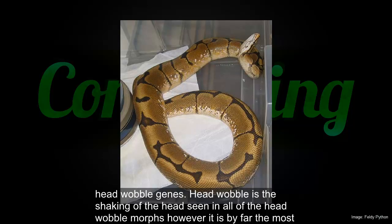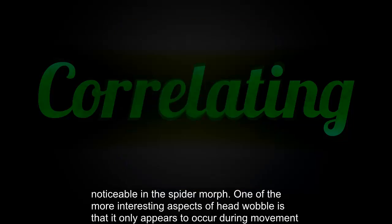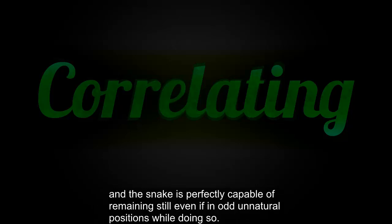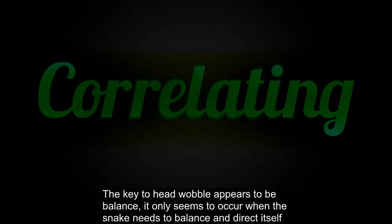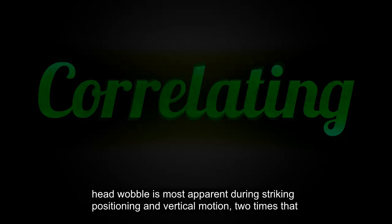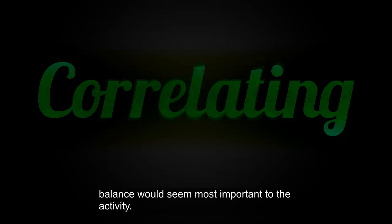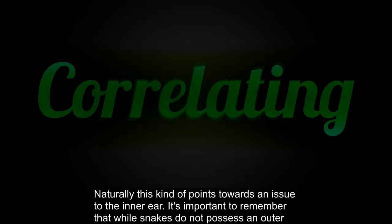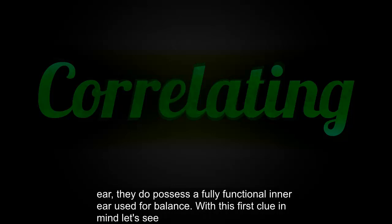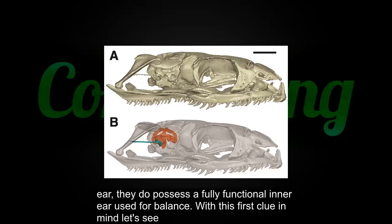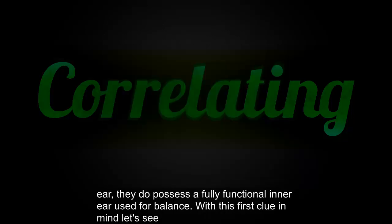All of these morphs stem from different mutations on the same gene, which from now on will be collectively referred to as head wobble genes. Head wobble is a shaking of the head seen in all of the head wobble morphs, however it is by far the most noticeable in the spider morph. One of the more interesting aspects of head wobble is that it only appears to occur during movement — the snake is perfectly capable of remaining still, even in odd unnatural positions. The key to head wobble appears to be balance; it only seems to occur when the snake needs to balance and direct itself. Head wobble is most apparent during striking, positioning, and vertical motion — two times that balance would seem most important. This naturally points towards an issue with the inner ear. It is important to remember that while snakes do not possess an outer ear, they do possess a fully functional inner ear used for balance.